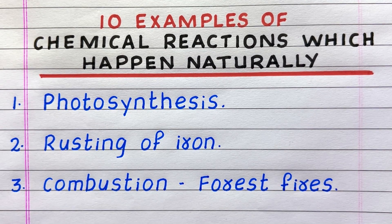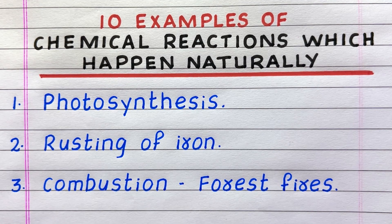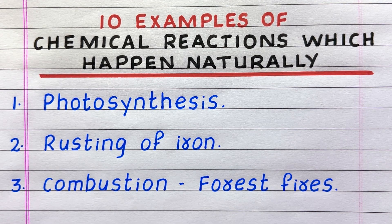The first example of a chemical reaction which happens naturally is photosynthesis. Second, rusting of iron. Third, combustion — for example, forest fires.